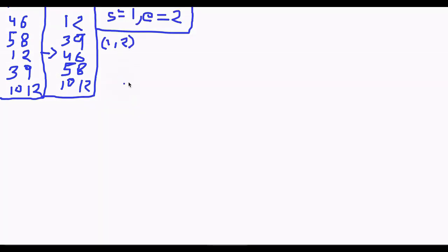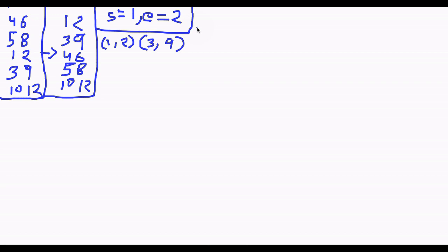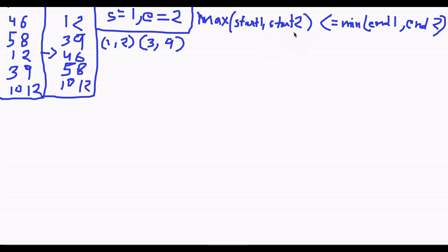Now let's take our first interval 1 to 2 and our second interval 3 to 9. We have to check if these intervals are overlapping. The equation to check overlapping is: if max(start1, start2) is less than or equal to min(end1, end2), then the two intervals are overlapping.